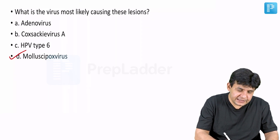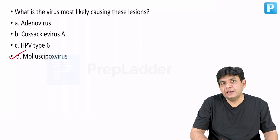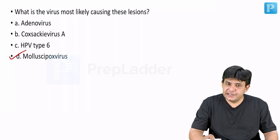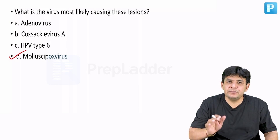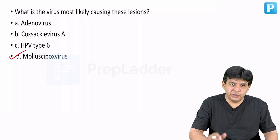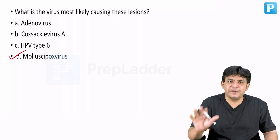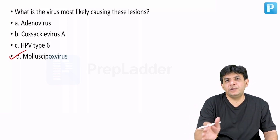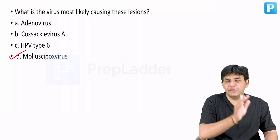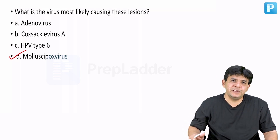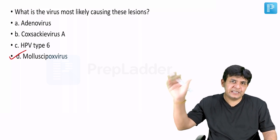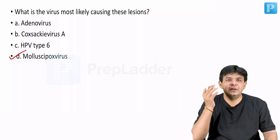The answer is Molluscum pox virus, and we are talking about Molluscum contagiosum. It has four types: MCV1, MCV2, MCV3, and MCV4. MCV1 is the most common, while MCV2 is associated with HIV.